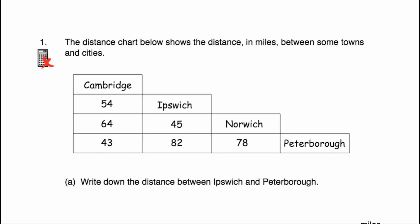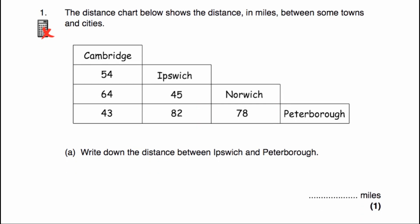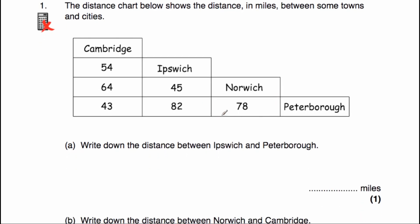Question A says write down the distance between Ipswich and Peterborough. There's Ipswich and there's Peterborough, so we're going to go down and across. This is the distance between them, which would be 82 miles.